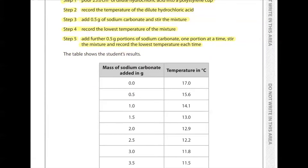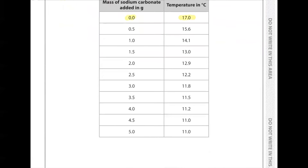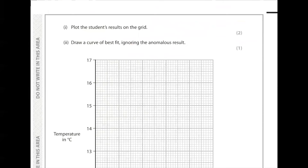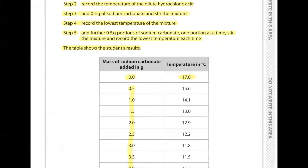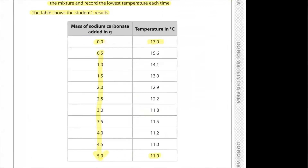The table shows the student's results. At mass 0.0 g the temperature is 17°C, and as the mass of sodium carbonate added increases, the temperature decreases. Plot the student's results and draw a curve of best fit, ignoring the anomalous result. At 0.0 g: 17°C; at 0.5 g: 15.6°C.